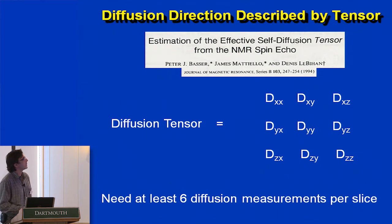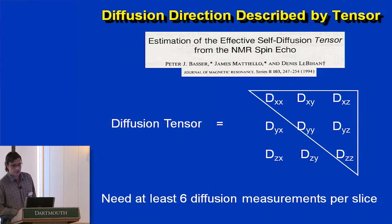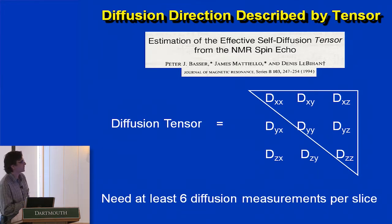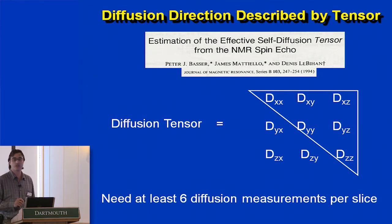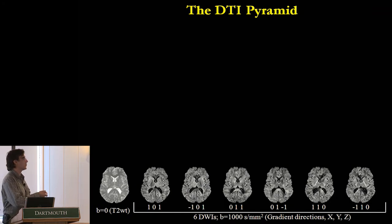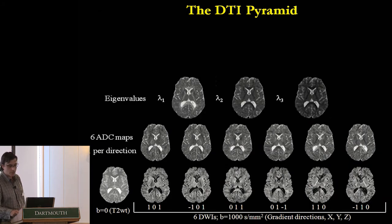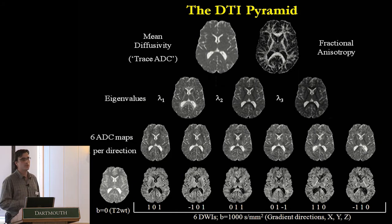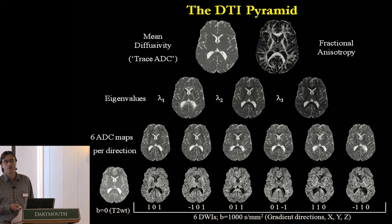Quickly on the diffusion tensor: this was from Peter Basser in 1994. You'll see later that people go beyond the tensor to more complex models. This is the simplest model — you need at least six diffusion measurements per slice. You can measure diffusion in different directions by changing the gradients, querying which way water molecules are moving the most. If you measure six diffusion directions and a B0 non-diffusion-weighted image, you can calculate ADC maps in each direction, then eigenvalues, then mean diffusivity and FA maps. What people are doing now is acquiring hundreds of diffusion directions and doing much more sophisticated modeling.